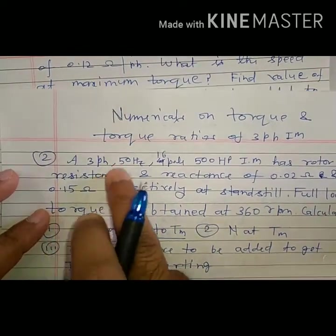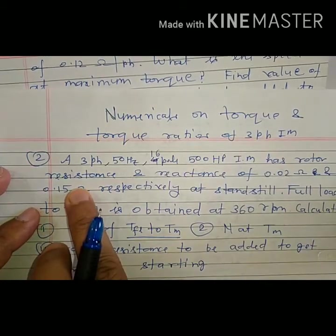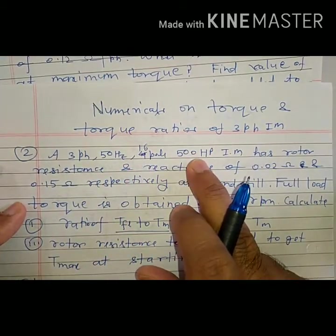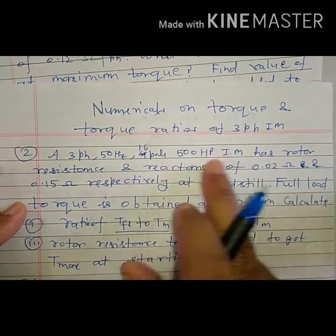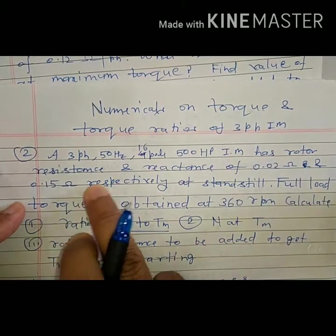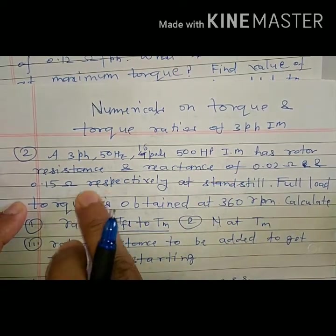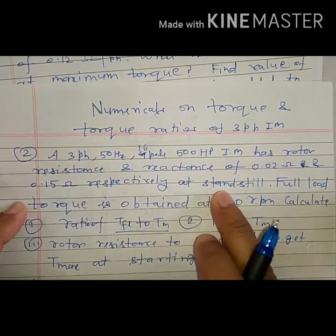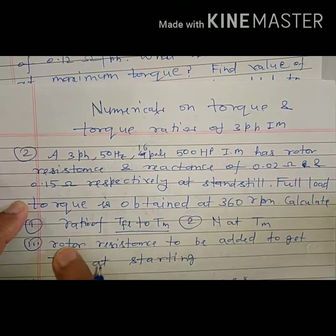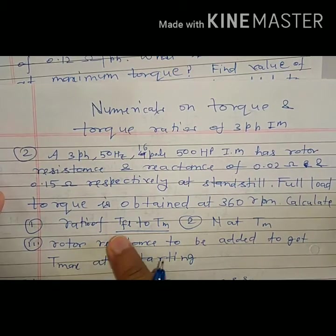Let us solve numerical on torque and torque ratio. Question: A 3-phase, 50 Hertz, 16-pole, 500 HP induction motor has rotor resistance and reactance of 0.02 and 0.15 Ohm respectively at standstill. Full load torque is obtained at 360 RPM.